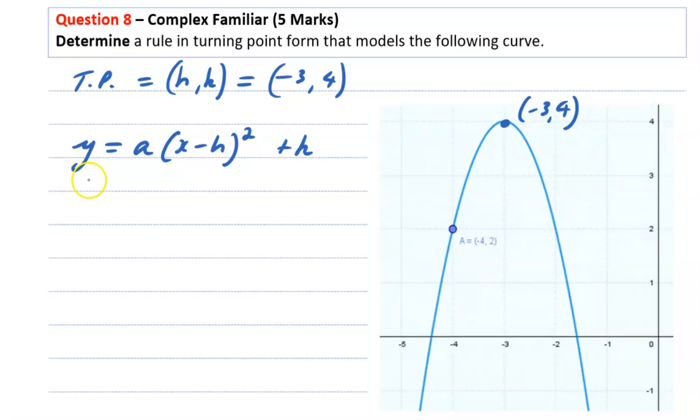Now because our turning point has been noted, we can sub in h and k. To calculate a, we sub in a point.